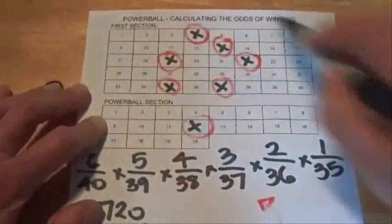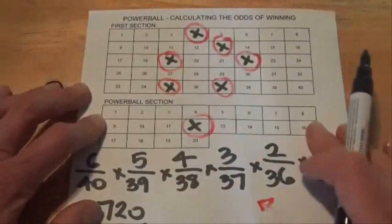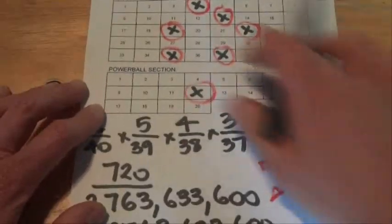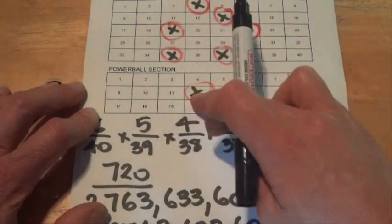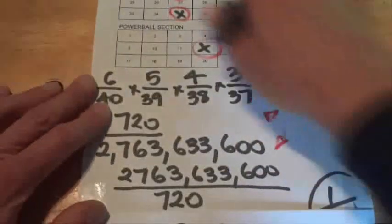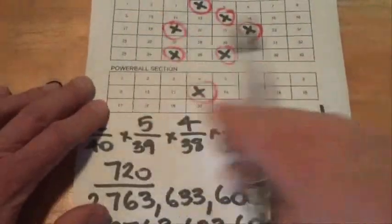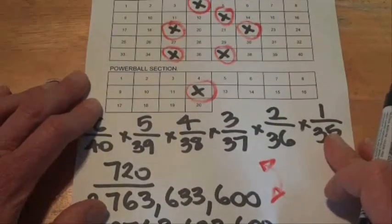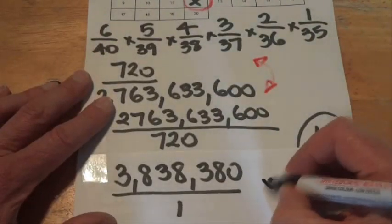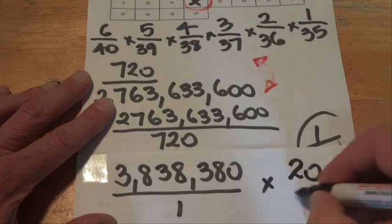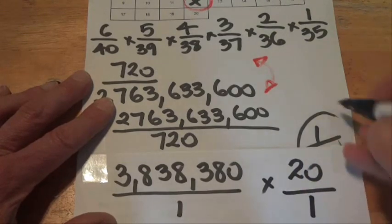That's your chance of selecting six numbers out of 40 in the first section of the Powerball, but we've also got this second section, which is we've got one chance in 20. Once we've selected those six numbers, we've got one chance in 20 of selecting the Powerball as well, so we need to increase the odds by 20 to 1.